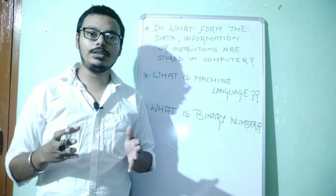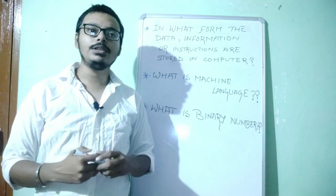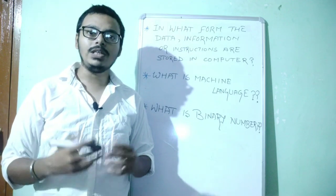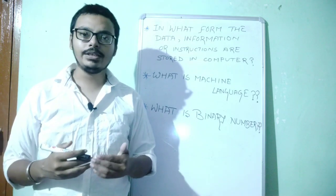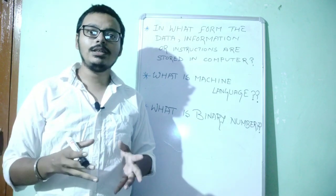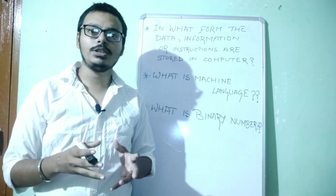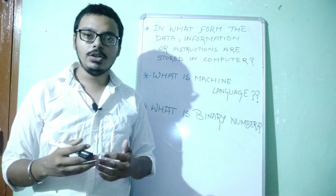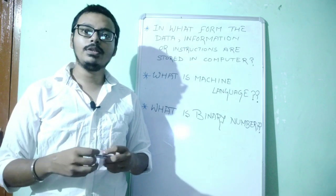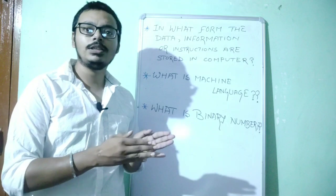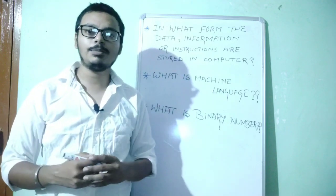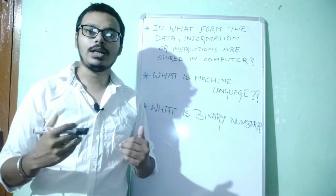First, let us consider this situation: how do we human beings interact with each other, or how do we pass information among one another? We use language, right? Someone talks in English, someone in Hindi, Nepali, Bengali, Spanish. These are languages. The main purpose of using language is to pass information and interact with another human being. Similarly, languages give us a definite set of rules to follow so that the next person can understand what we want to say.